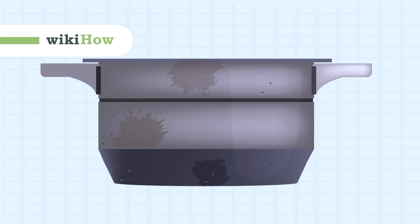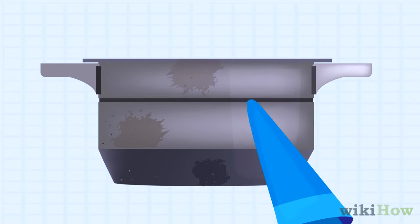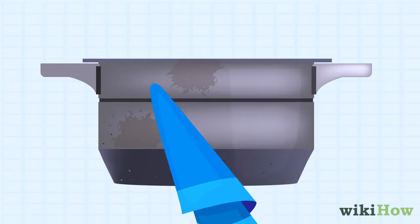To clean oxidized aluminum, first wipe off any dirt or debris on it using a clean cloth.